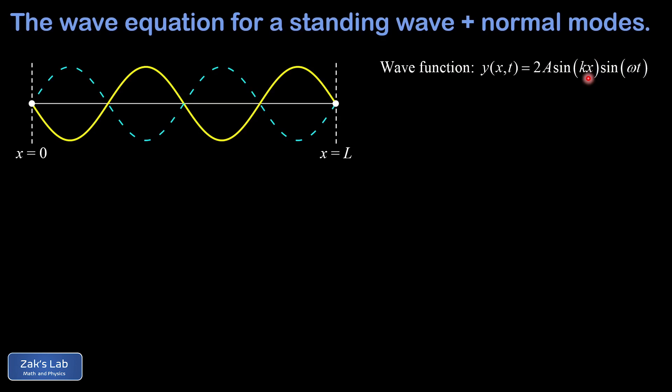Now we just have to enforce that our wave function is zero at x = L as well. And this requires that the sine of kL is equal to zero. Well this occurs when kL is an integer multiple of π. So this allows us to say what the values of k are for the standing waves that satisfy the boundary conditions, and that's nπ/L where n is 1, 2, 3, and so on.